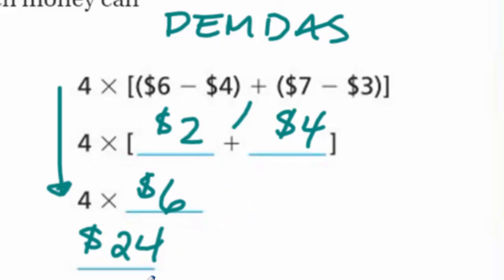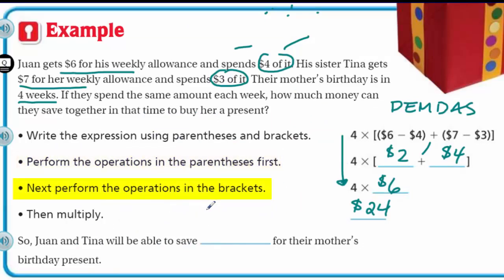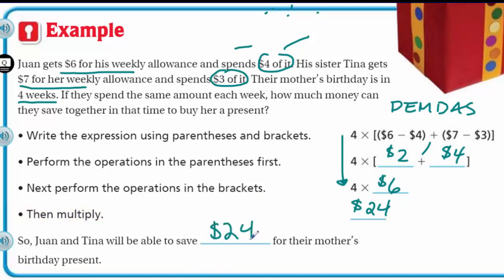Four times six is 24. That's the answer - it's weeks times the amount of money saved together each week, so Juan and Tina can save 24 dollars for their mother's birthday present. We performed the operations in the parentheses first, then the brackets, then multiplied.